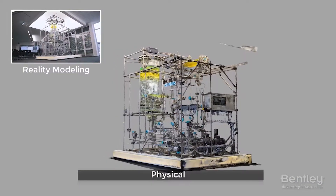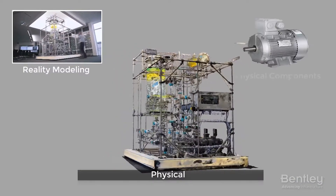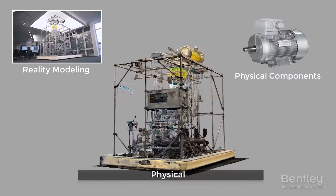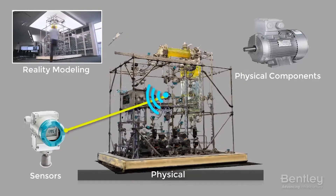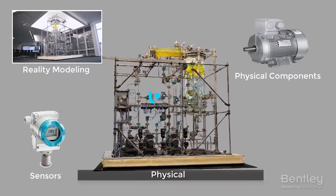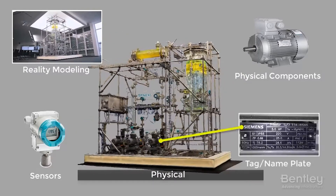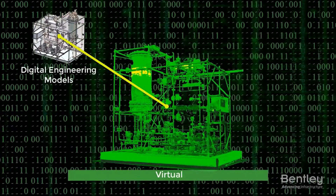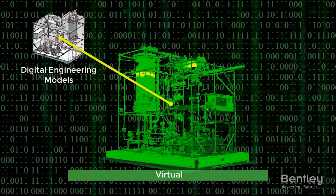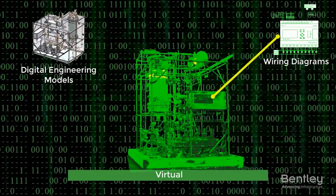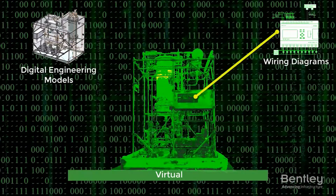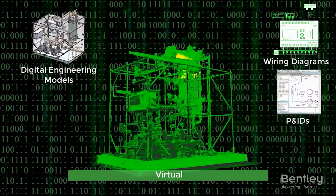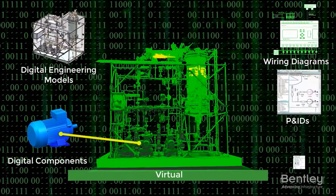Digital twins give us a digital representation of a physical asset, process, or system, as well as the underlying engineering information that allows us to understand and model its performance. Typically, a digital twin can be synchronized from multiple sources, including sensors and continuous surveying, to represent its near real-time status, working condition, and position.